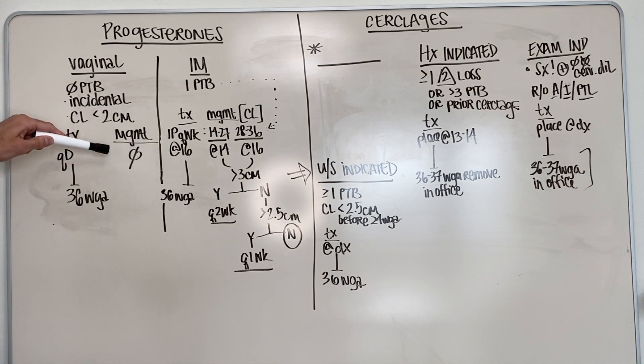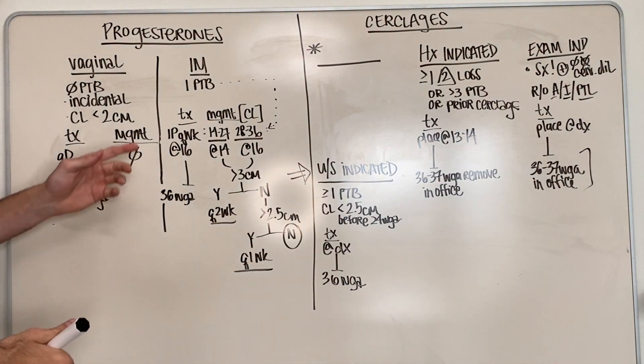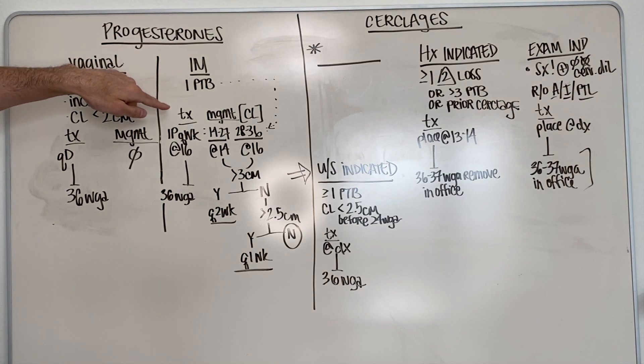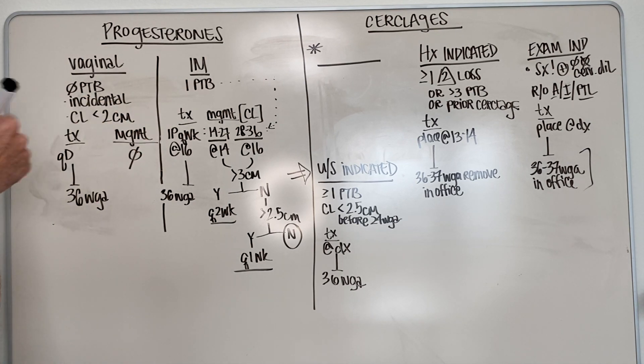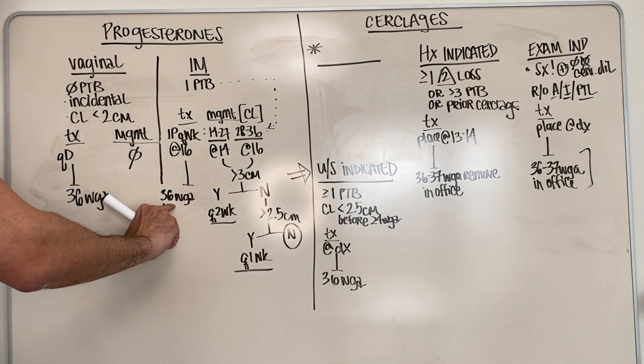You do not have to manage these patients. So when you're looking at the IM progesterone, they've had to have one history of preterm birth. That's what the big difference. And with this, you're immediately going to start treating them with 17p, like 250, Q weekly at 16 week gestation, stopping at 36 weeks.